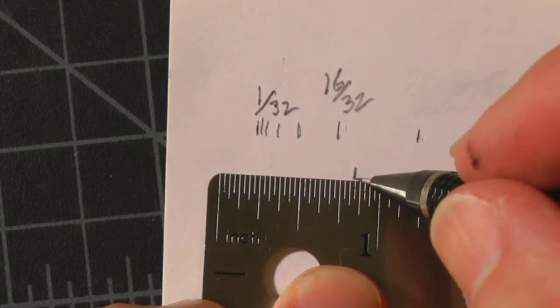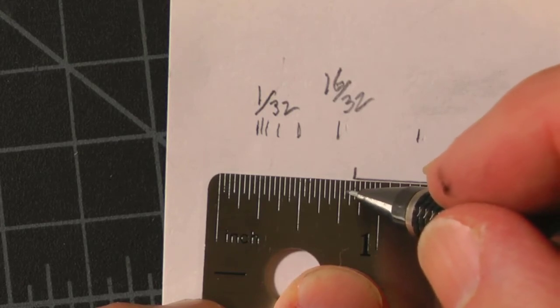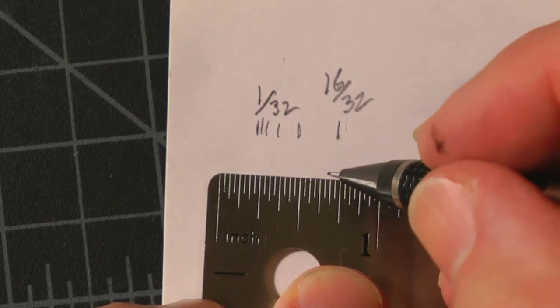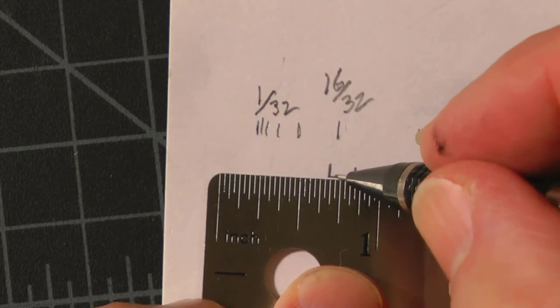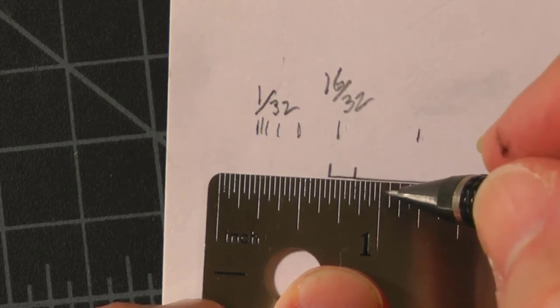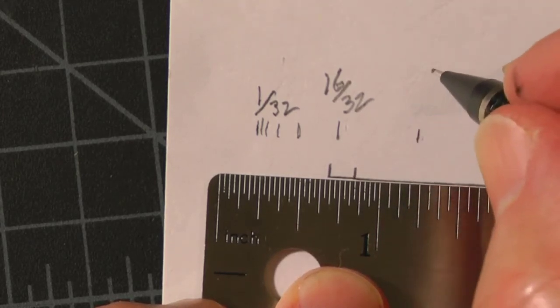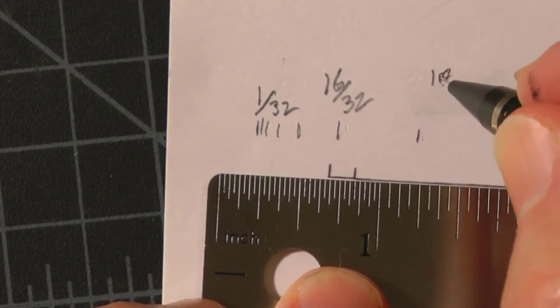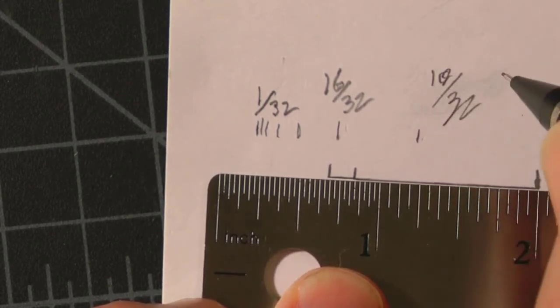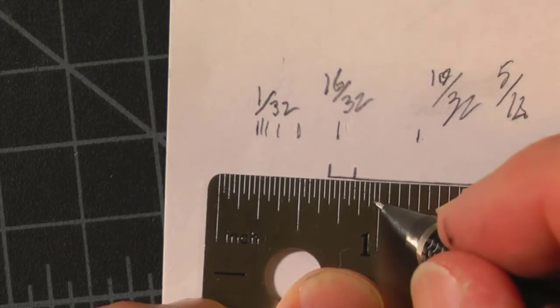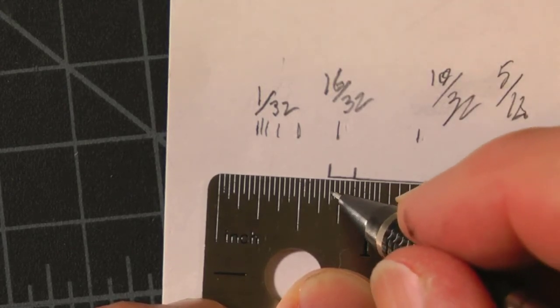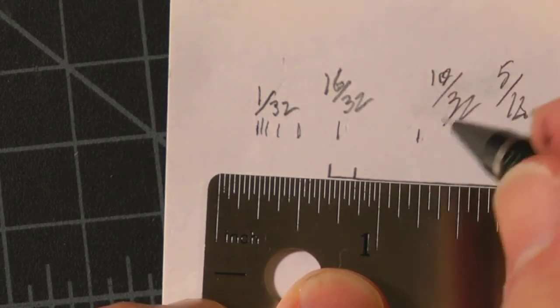If you want to add another five thirty-seconds, we can count one, two, three, four, five, which goes to right here, which is ten thirty-seconds. Okay, so ten thirty-seconds, if we divide ten thirty-seconds in half, we'd end up with five sixteenths. So if we look at this, we have one, two, three, four, five sixteenths. So that works out the same.